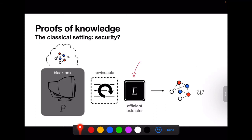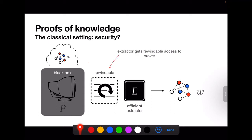To formalize what it means for the prover to really know w: there's an efficient machine called the extractor whose job it is to compute w. The prover is modeled as a black box, so the extractor only gets to test its input-output behavior. However, the extractor gets to rewind the prover — it can replay one of the rounds with a different message and see what the prover does. If after interacting with the prover for a polynomial number of steps the extractor can output the witness, then we say that P knew the witness.